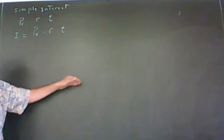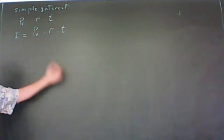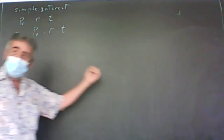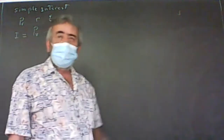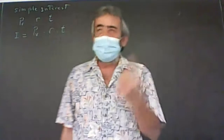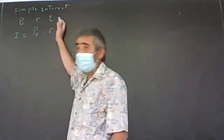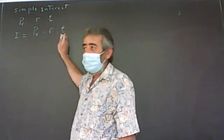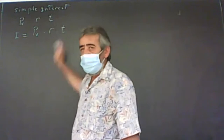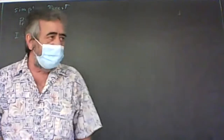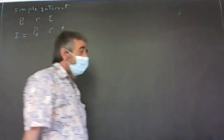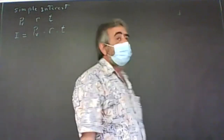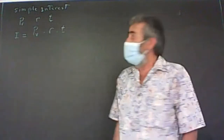So the simple interest formula is I = PV × R × T. Remember, T is always in years. So if you're given time in any other units, you have to convert it to years before you can use it.